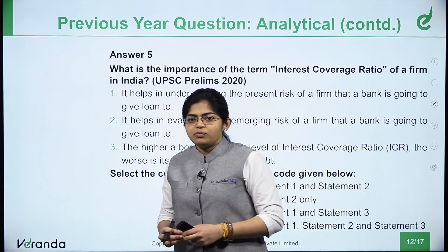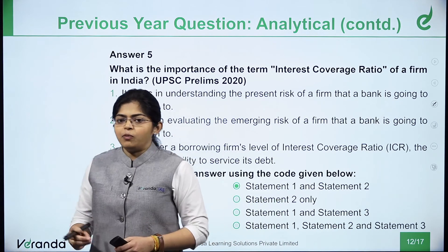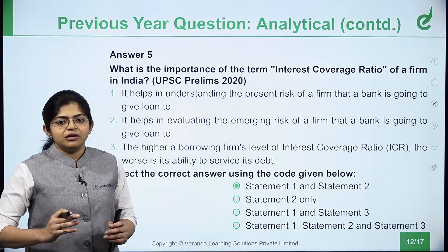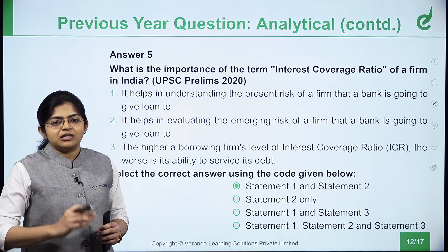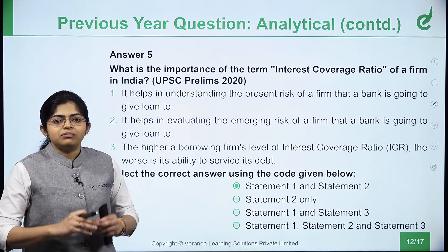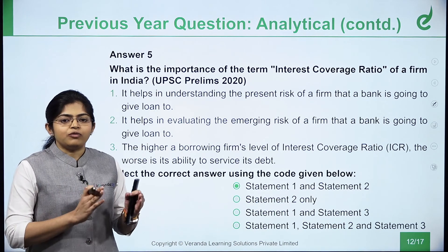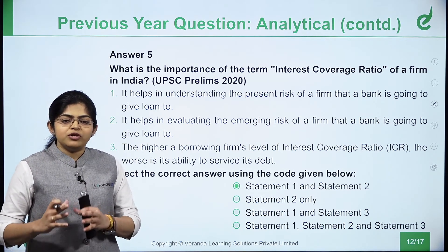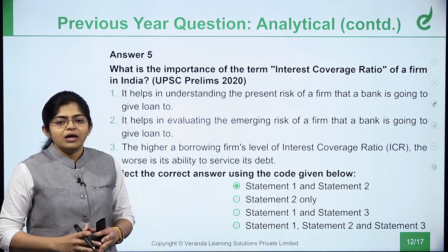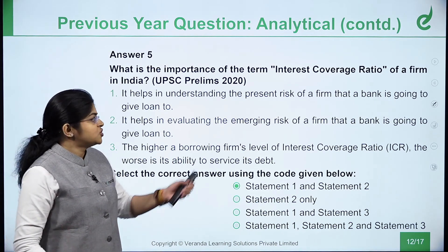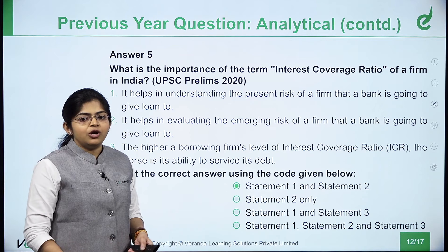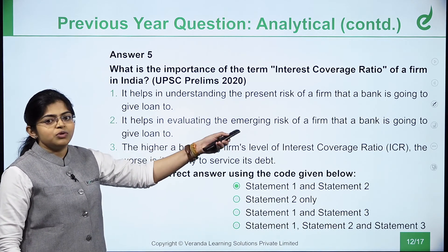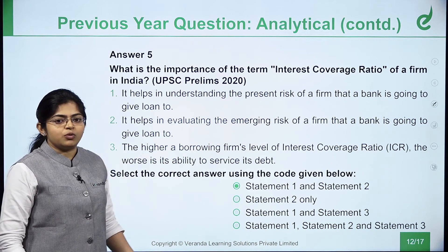In the UPSC Prelims Paper 1, you should know that 80% of the question paper will come from topics you have studied, but 20% will always be new to you. In those cases you need to use practical application to derive the answer — just as we answered the interest coverage ratio question without studying it specifically.